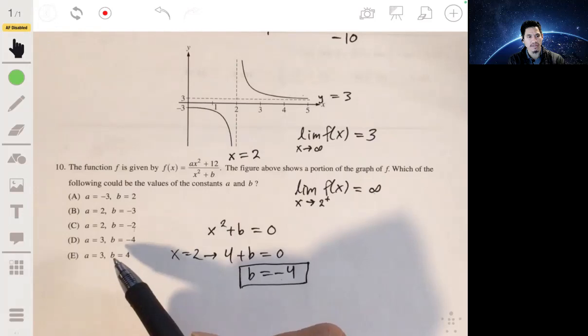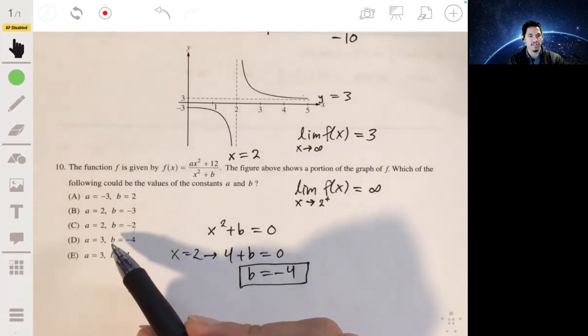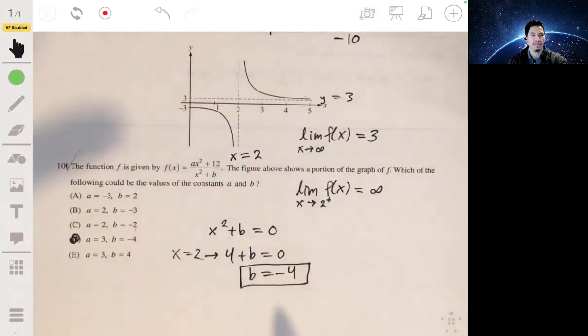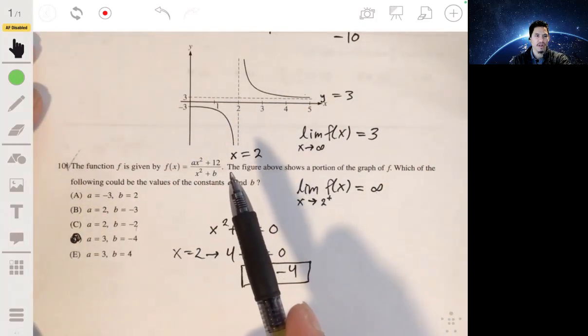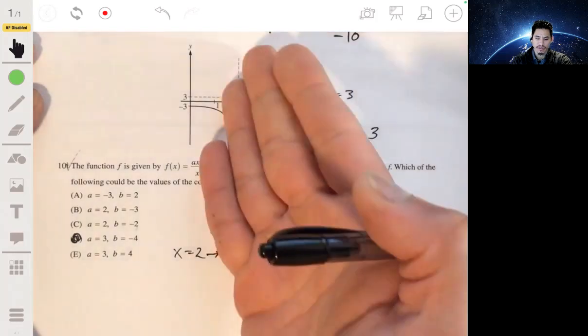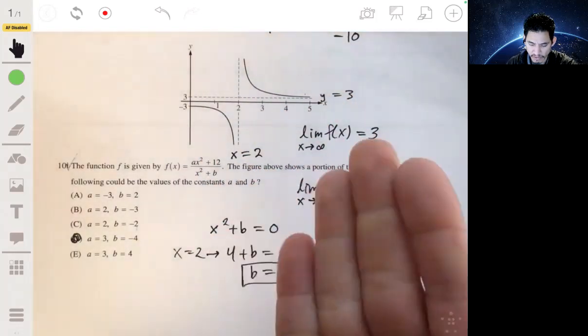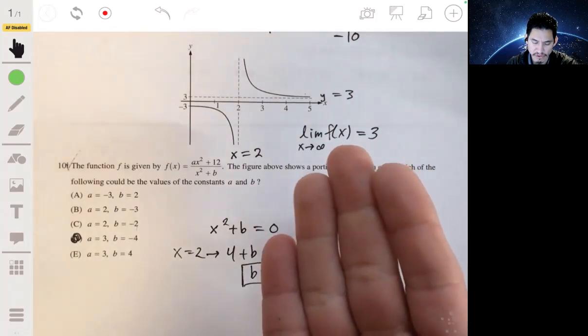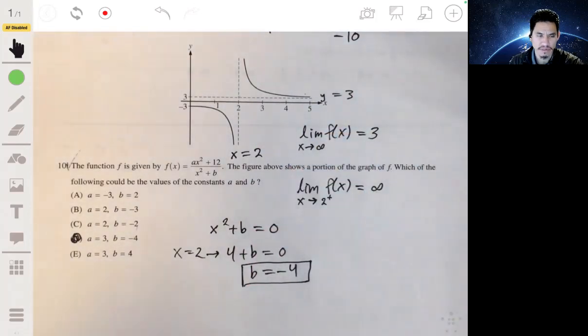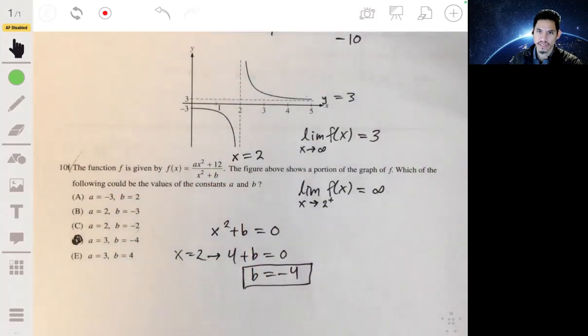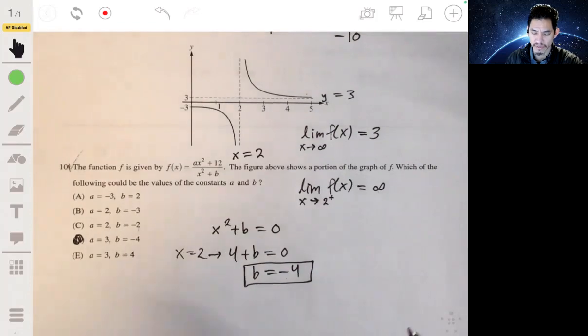And from there, you could just, you get that the answer is going to be d. So this one is more conceptual, because you have to know exactly what type of asymptote would correspond to which. So maybe review that in case you're a little, maybe review the unit that you learned about horizontal and vertical asymptotes. Or just remember the denominator being undefined is going to lead to the vertical asymptote for the most part.